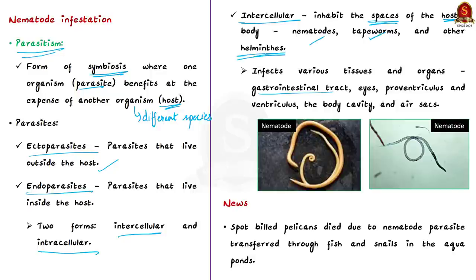Our focus is on intercellular parasites — those that inhabit the spaces of the body of the host, such as the gastrointestinal tract, eyes, air sacs, etc. Examples include nematodes, tapeworms, and other helminths. Various species of nematodes can infect various tissues and organs inside a bird's body — the gastrointestinal tract, eyes, body cavity, and air sacs. The parasite is suspected to have transferred through fish and snails found in aqua ponds where birds usually prey.